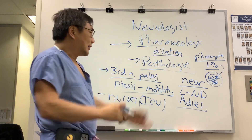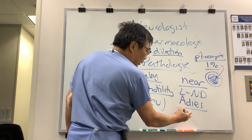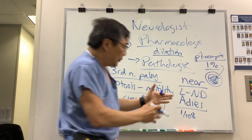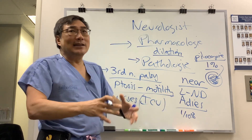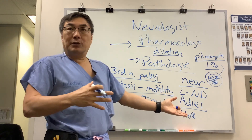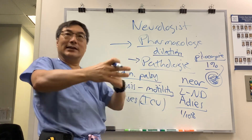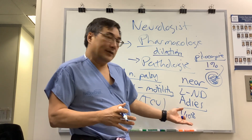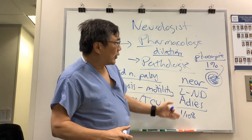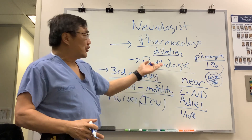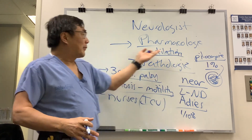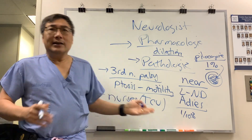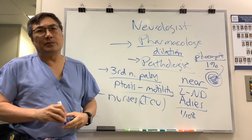If you're worried it's Adie's tonic pupil, use 0.1% pilocarpine first. If the pupil constricts to 0.1%, that confirms Adie's tonic pupil, because of denervation supersensitivity — it has light-near dissociation and responds to low-dose pilocarpine. The combination of 0.1% and 1% pilocarpine can differentiate pharmacologic from pathologic dilation. Always make sure it's not a third nerve palsy and ask about exposure history.